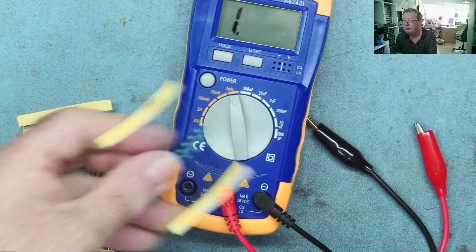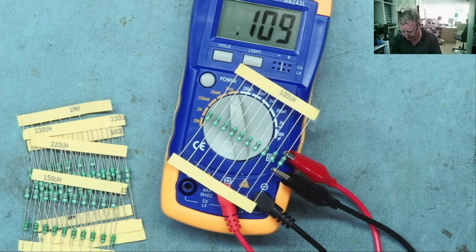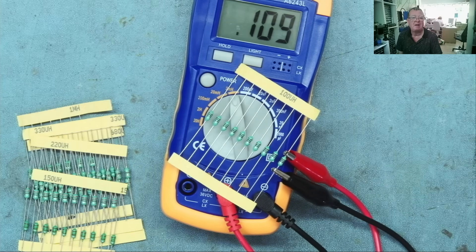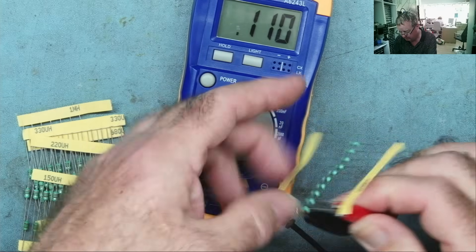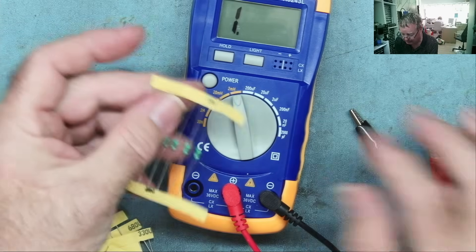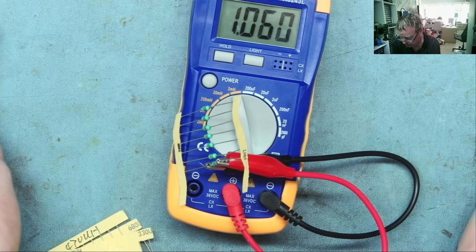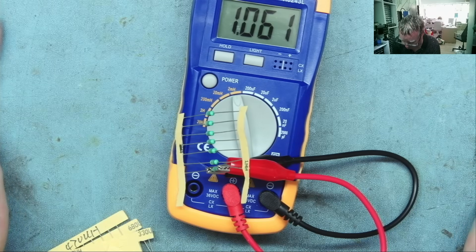We'll go up a factor of 10 now. So 100 microhenries. Yeah. Now it's reading these quite accurately. So we can see 10 microhenries is about the minimum. And the largest one of these I have is 1 millihenry, which is 1,000 microhenries. So we're still on the same range. And that's very close, I would say.